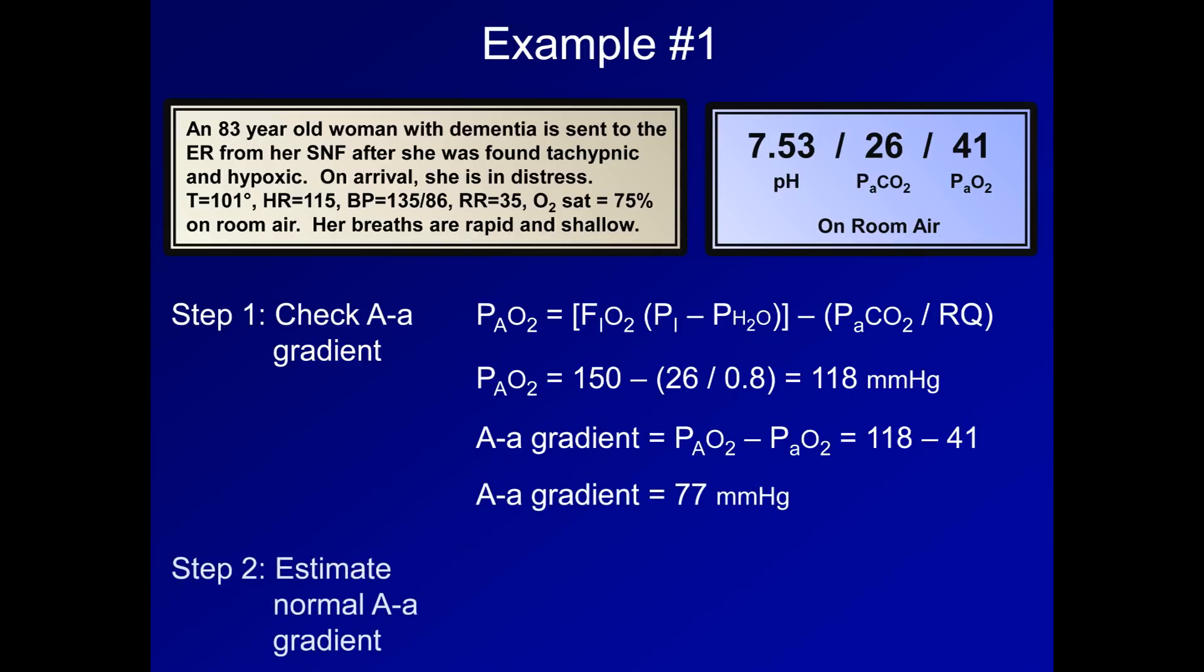Step 2 is to estimate the normal AA gradient for this patient. Using the previously mentioned equation, the normal gradient equals age divided by 4 plus 4, and we get 25 millimeters of mercury for her.